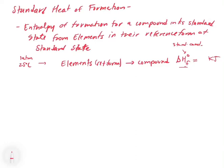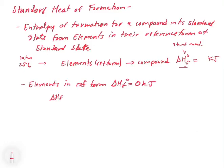This delta H of formation is going to equal some number in kilojoules. The most important thing is that we're starting from the elements in their reference form, putting them together to make a compound, and the enthalpy change associated with this process is the standard heat of formation. Elements in their reference form have a delta H of formation equal to zero kilojoules. For example, the delta H of formation for O2 gas equals zero kilojoules. We're basically starting with a reference that's at zero, and then anything off of that reference is what we measure.